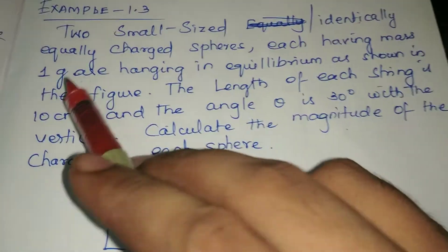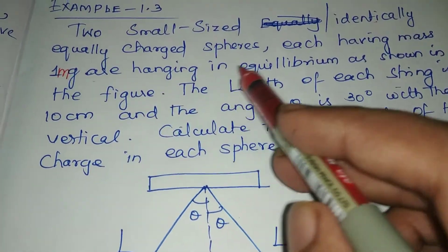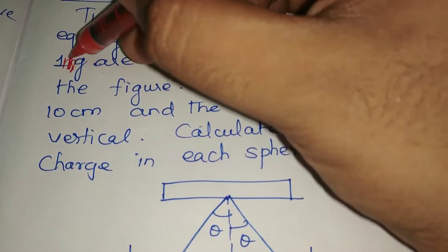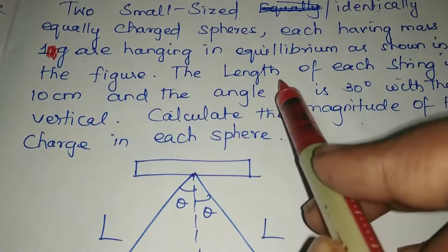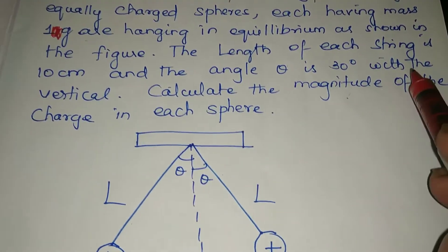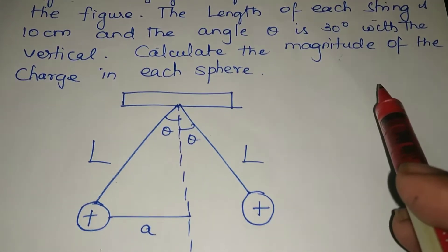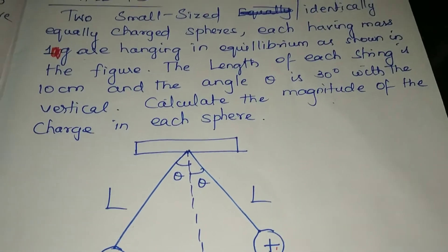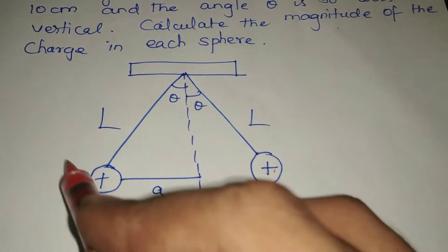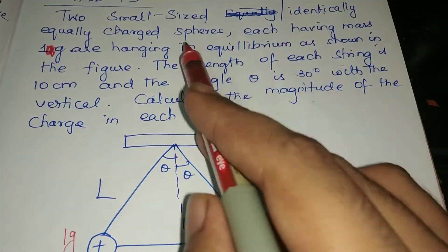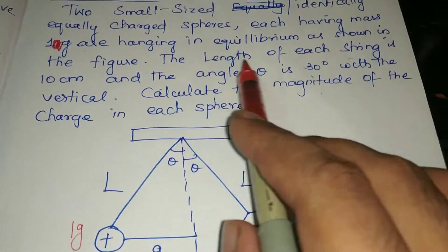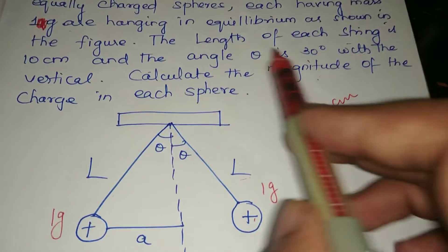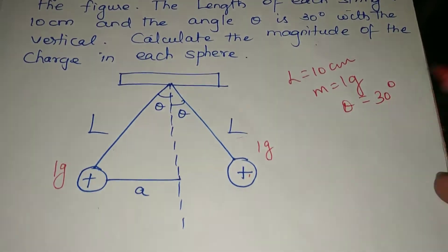The problem: 2 small sized, identically equally charged spheres, each having a mass of 1g, are hanging in equilibrium as shown in the figure. The length of each string is 10cm and the angle theta is 30 degrees with the vertical. We need to calculate the magnitude of charge on each sphere.